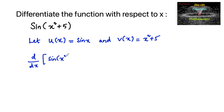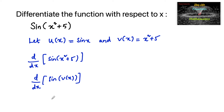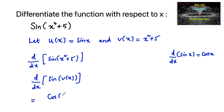Now, differentiation d/dx of sin(x² + 5) — we write d/dx of sin(v(x)). We know d/dx of sin(x) = cos(x), so d/dx of sin is cos(v(x)). Since v(x) is another function, by using the chain rule we also need d/dx of v(x).